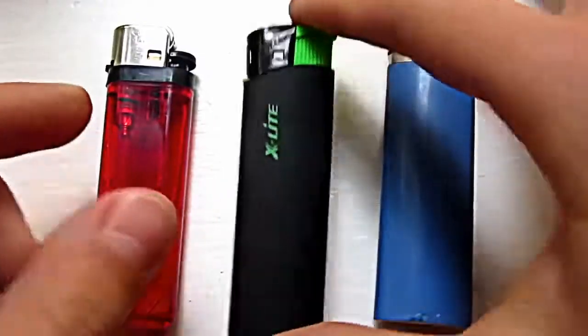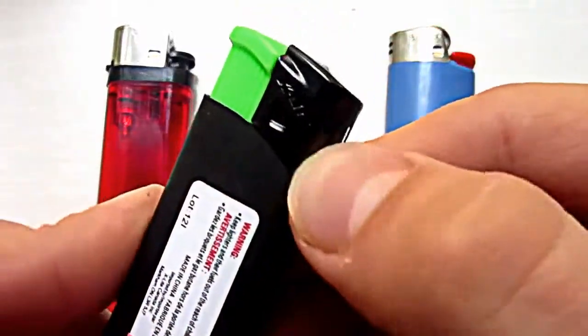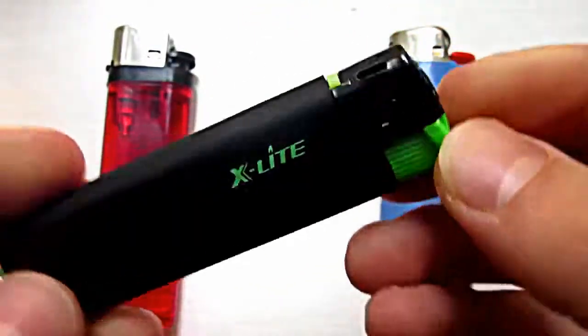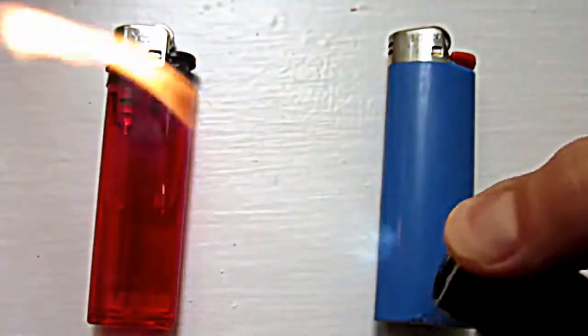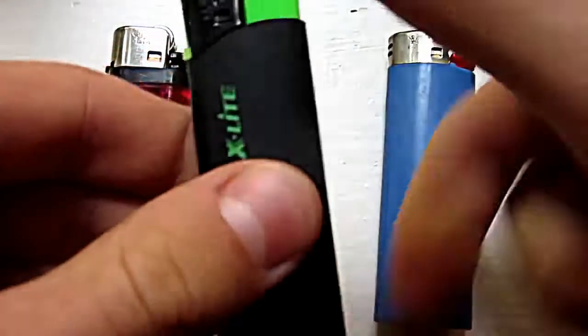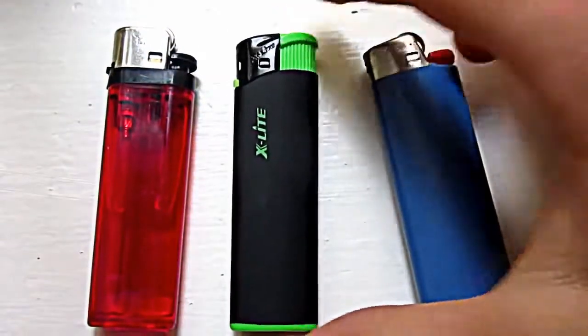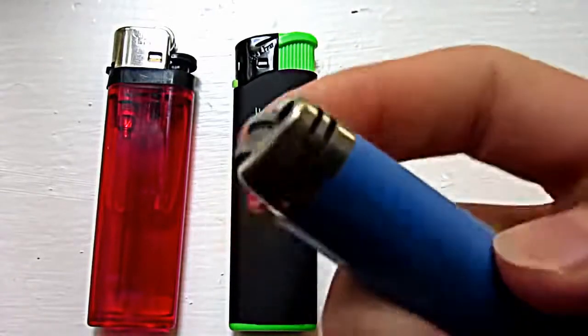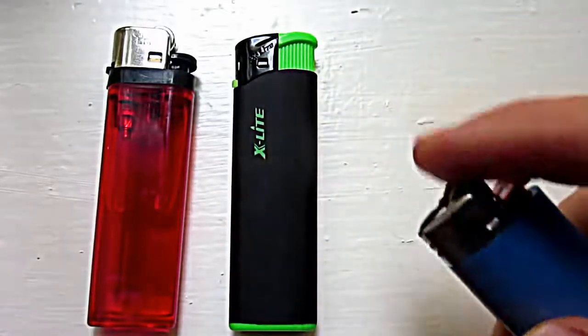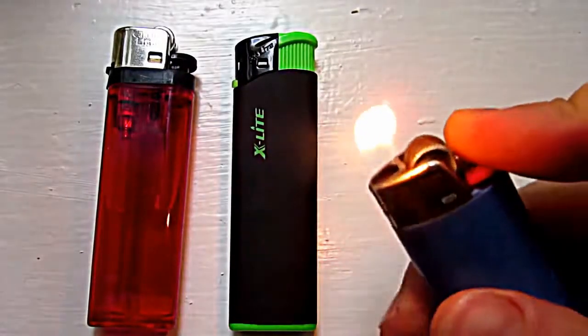Now other lighters do have the adjustable knob, like this one here called X-Lite, and it does still work pretty good. It's not as good as the other one, but if it has the knob it will work. This will not work with Bic lighters, as you can see there's no adjustable thing. Bic lighters just suck, so don't buy one of these.